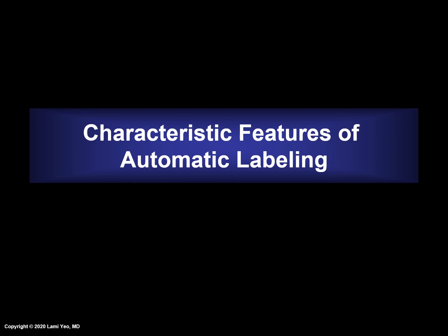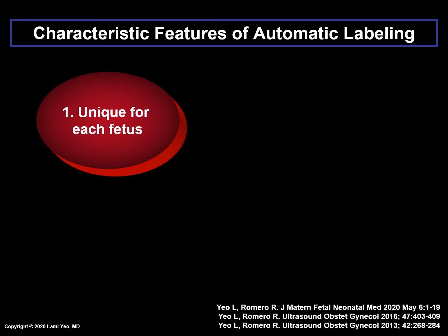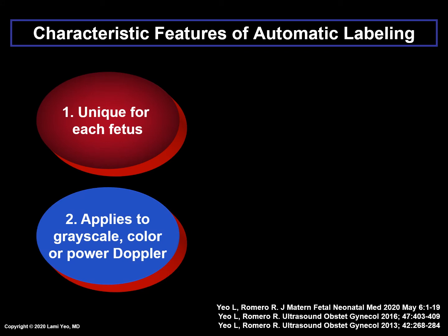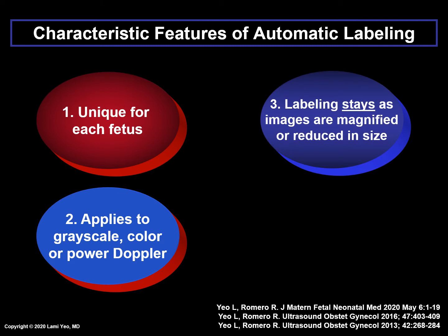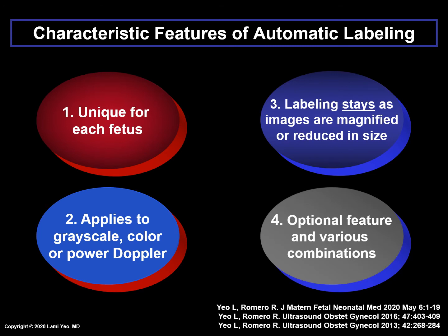What are the characteristic features of automatic labeling? There are four which will be reviewed. First, the labeling and its location is completely unique for each fetus. Second, automatic labeling may be applied to grayscale, color Doppler, or bidirectional power Doppler. Third, labeling stays with the corresponding anatomical structures even as cardiac images are magnified or reduced in size. And finally, automatic labeling is an optional feature that can be activated or turned off, and labeling occurs in various combinations.